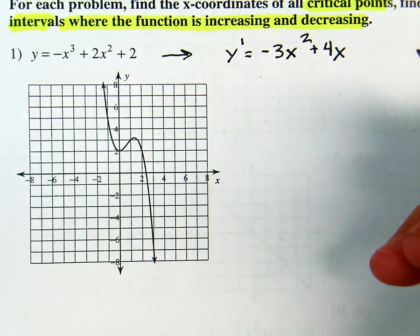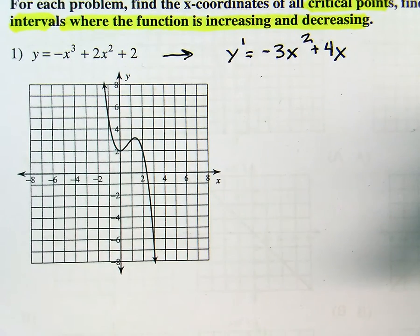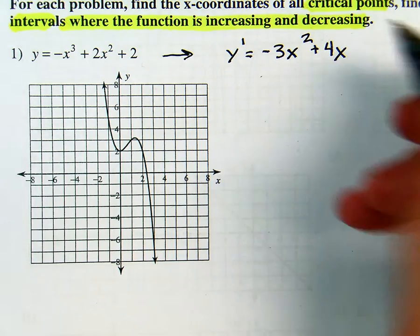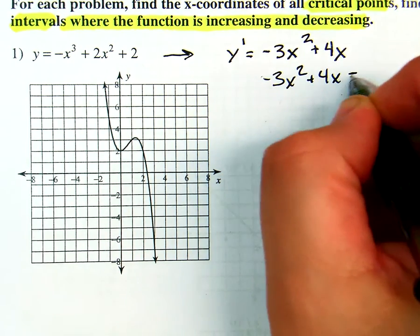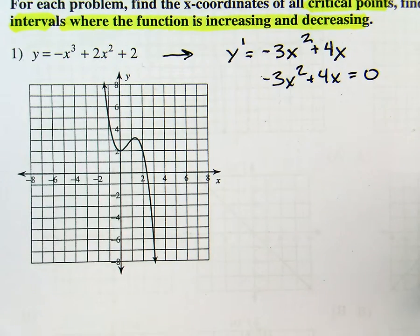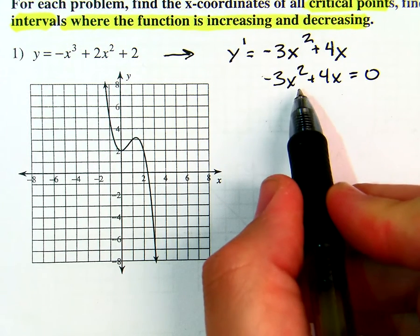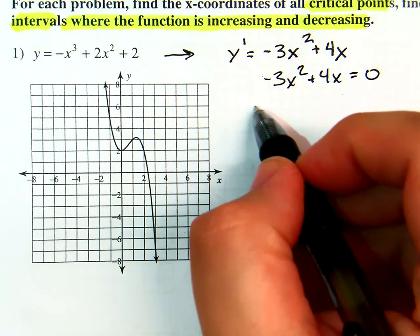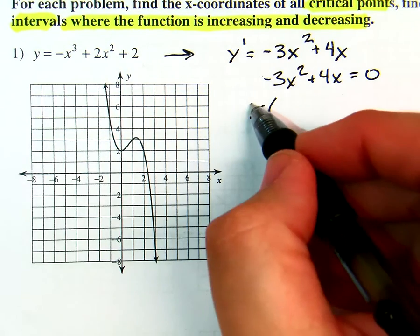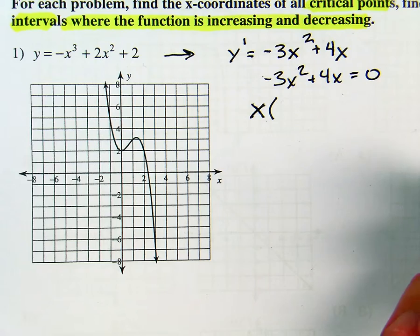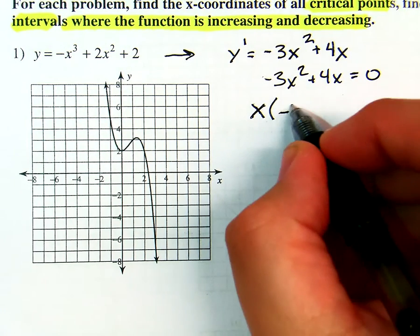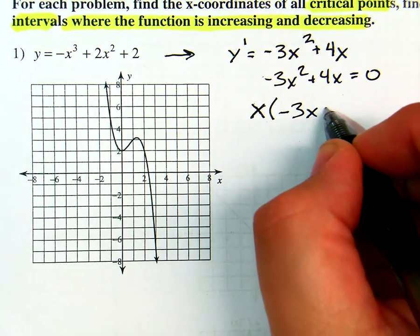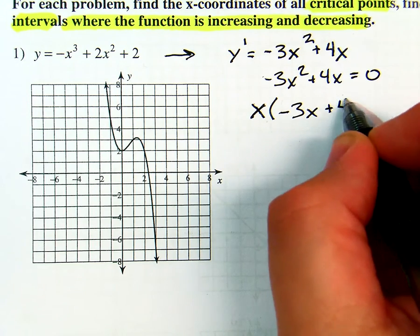To find critical points, set it equal to zero. So I'm going to take negative 3x squared plus 4x, set it equal to zero. You can factor out a negative x or just an x — I'll take an x, giving x times negative 3x plus 4 equals zero.